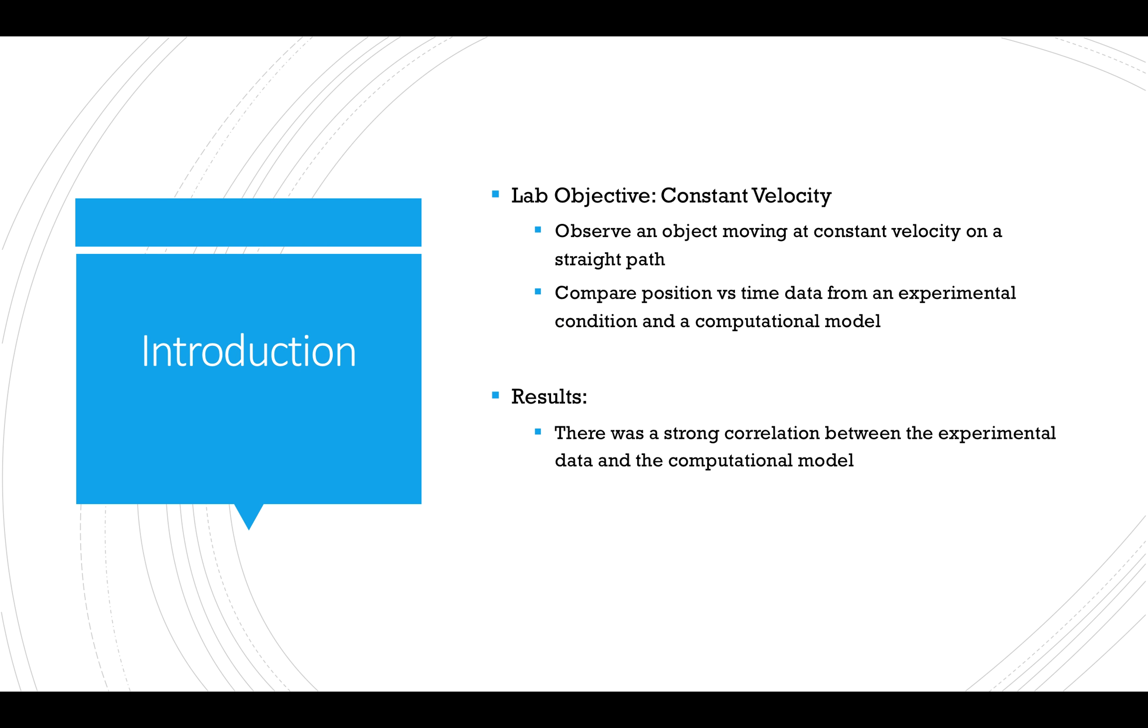The purpose of this lab was to observe an object moving at a constant velocity on a straight path and compare position versus time data from an experimental condition and a computational model. The results found that there was a strong correlation between the experimental condition and computational model demonstrating constant velocity on a singular axis.